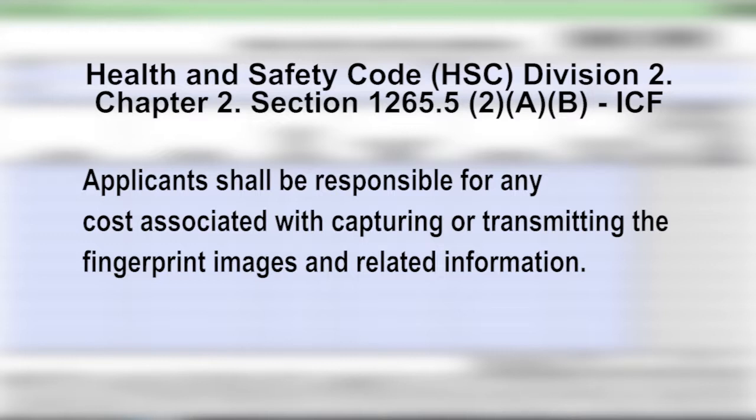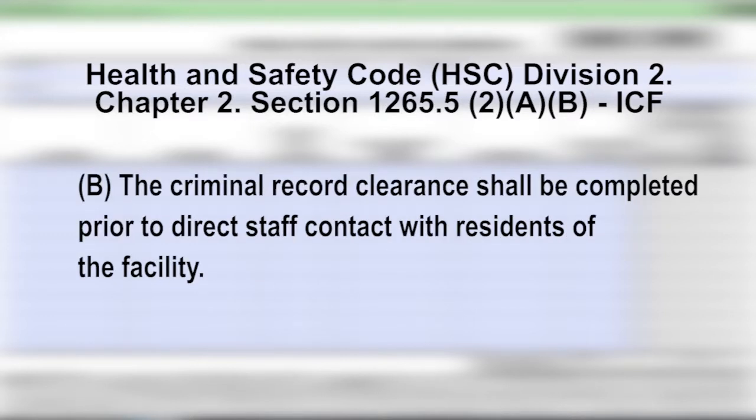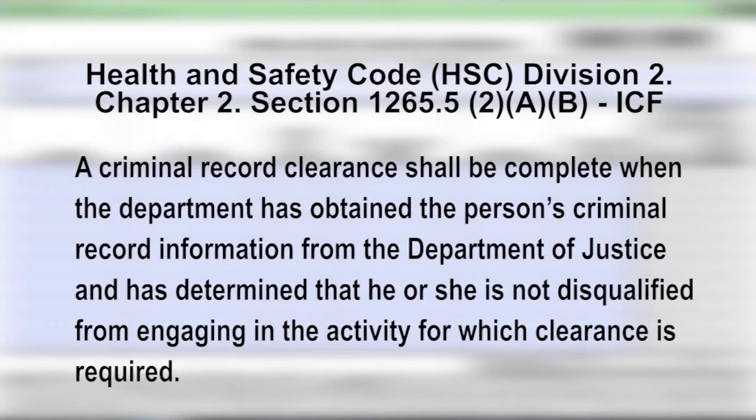Applicants shall be responsible for any cost associated with capturing or transmitting the fingerprint images and related information. The criminal record clearance shall be completed prior to direct staff contact with the residents of the facility. A criminal record clearance shall be completed when the Department has obtained the person's criminal record information from the Department of Justice and has determined that he or she is not disqualified from engaging in the activity for which clearance is required.